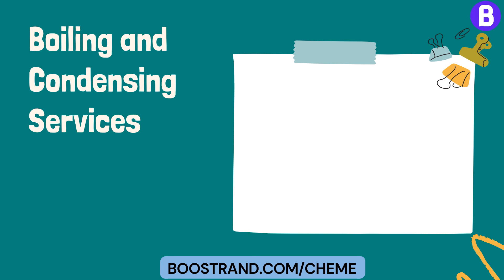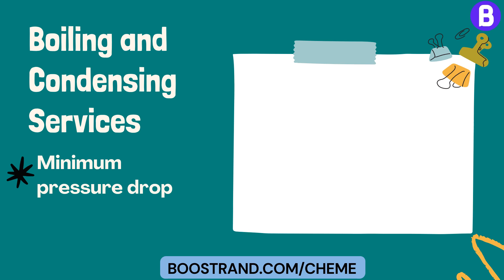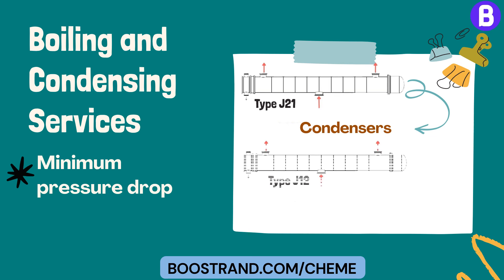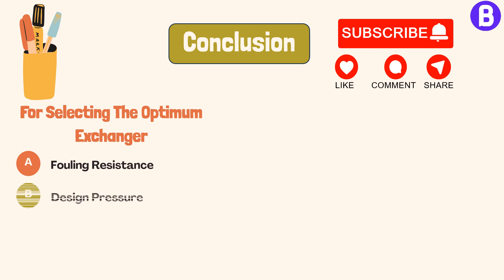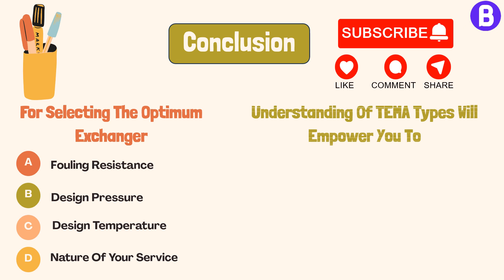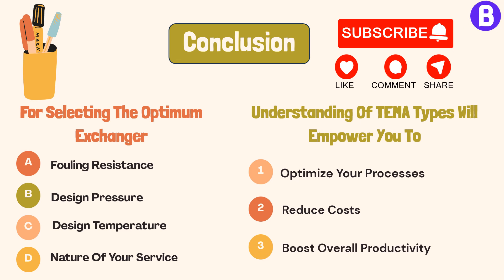We can also use the divided flow shell type — in other words J type — if we want the minimum pressure drop. Distributing the inlet flow for condensers, or the outlet flow for reboilers, can reduce the pressure drop significantly. That's why it's common to use a J21 shell type for condensers and J12 type for thermosyphon reboilers, with the front and rear head type selected based on cleaning requirements. Selecting the optimum exchanger Temer type is an essential aspect of ensuring efficient heat transfer in your industrial processes. By considering factors like fouling resistance, design pressure and temperature, and the nature of your service, a thorough understanding of Temer types will empower you to optimize your processes, reduce costs, and boost overall productivity.